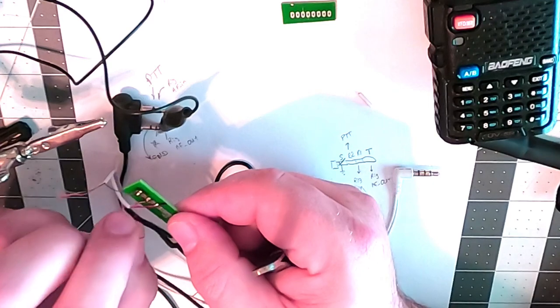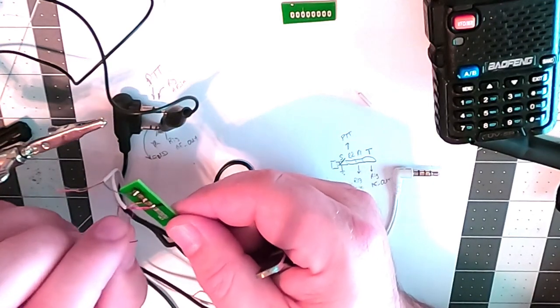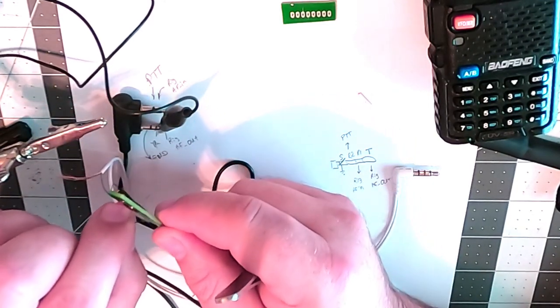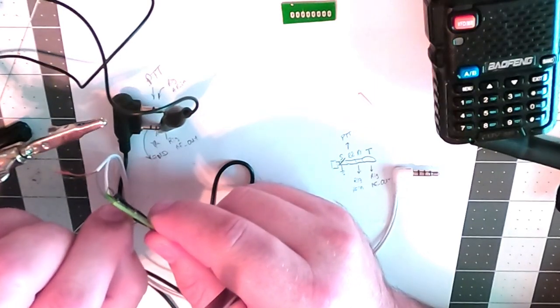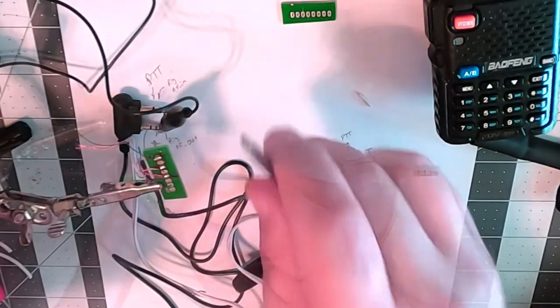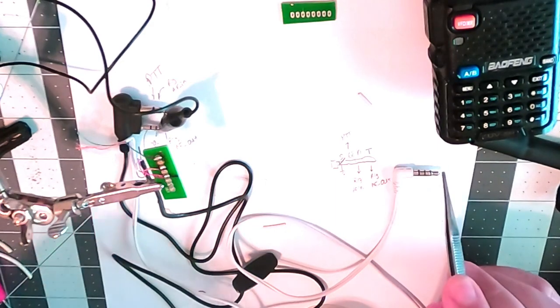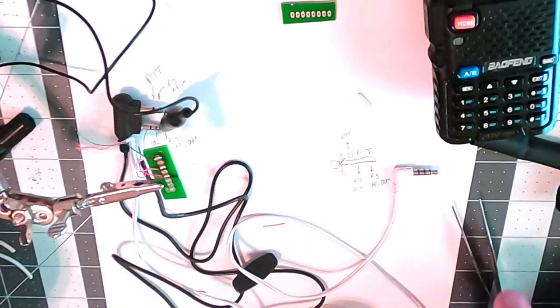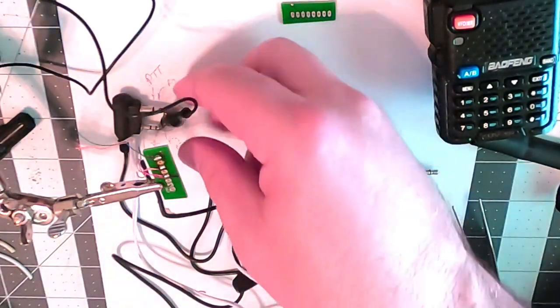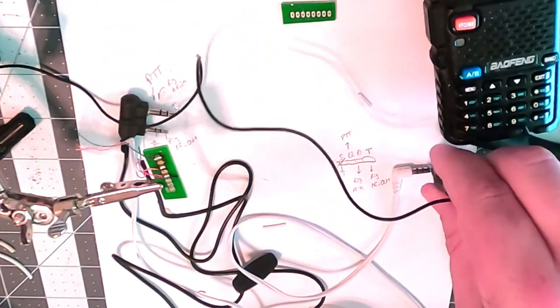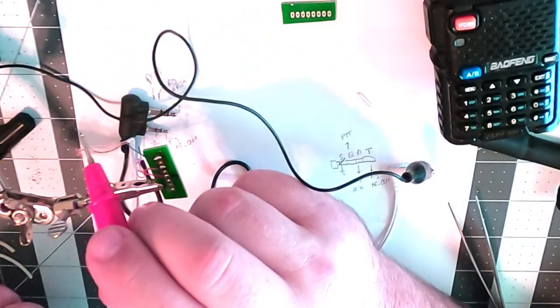We do have enough. Let's go ahead and try to push that through there. Now we need rig AF out, which is the tip of this one. So we need to find the tip on this one. I think that's the tip right there.